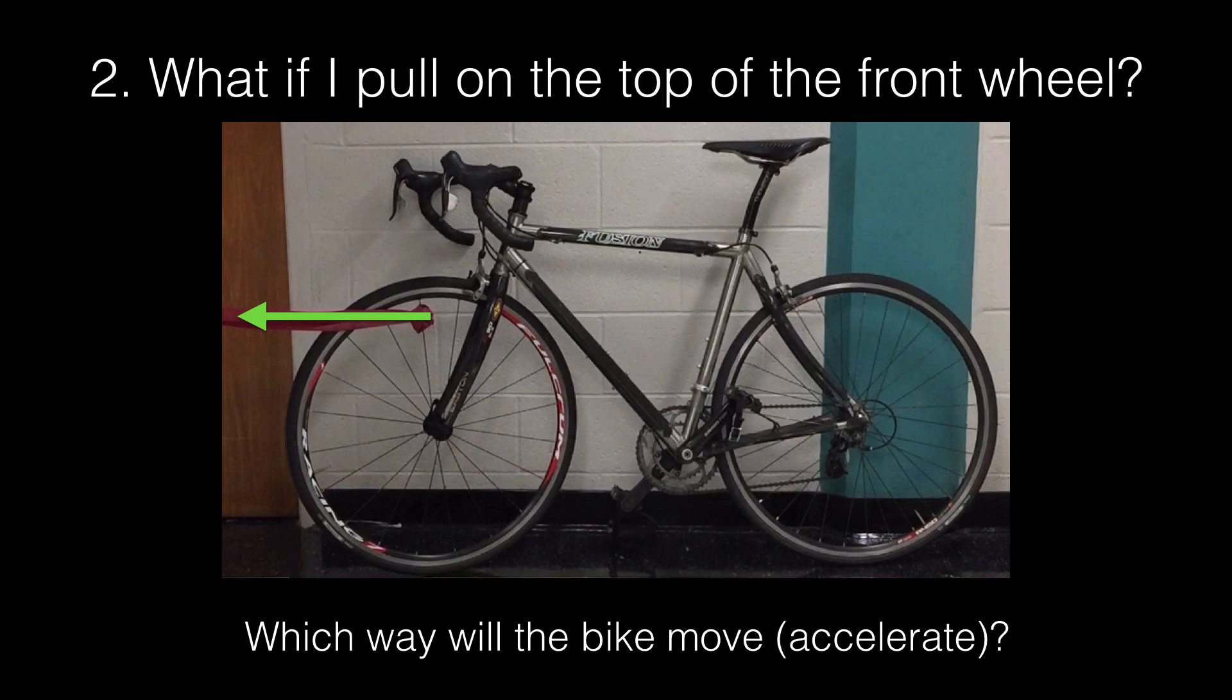Okay, now I'm going to attach the little rope, it's actually a bungee cord, to the top of the wheel. I'm going to pull it to the left. Which way will the bike move? And when I say move, it's at rest. It starts to move. So really we're talking about acceleration. Which way does it accelerate?